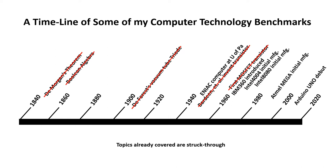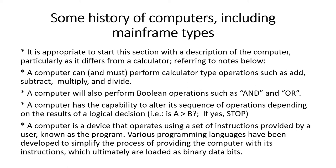Here's our timeline again of the topics we want to cover. I've struck through the topics I've already talked about in the previous video. Now we're coming up to 1946 and the ENIAC computer at the University of Pennsylvania, which is the first computer. In this part of the series we're going to discuss the evolution of the computer as it leads into the microcomputer.